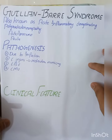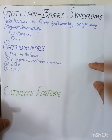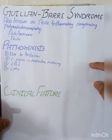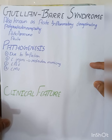Today's topic is Guillain-Barré syndrome, also known as acute inflammatory demyelinating polyradiculoneuropathy. It is an autoimmune disease and an acute polyneuropathy. We call it acute polyneuropathy because it occurs suddenly and subsides within the passage of days or months.